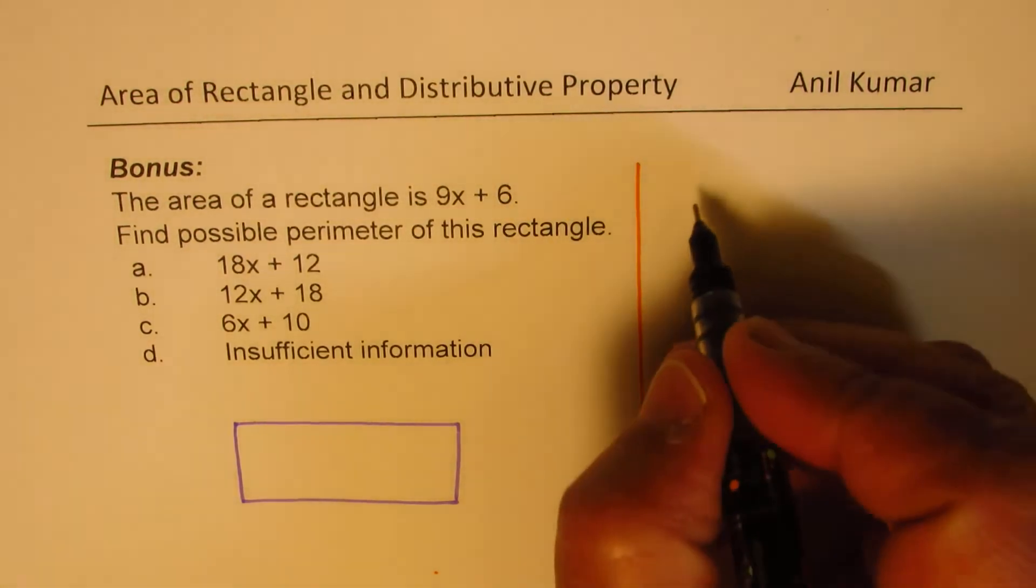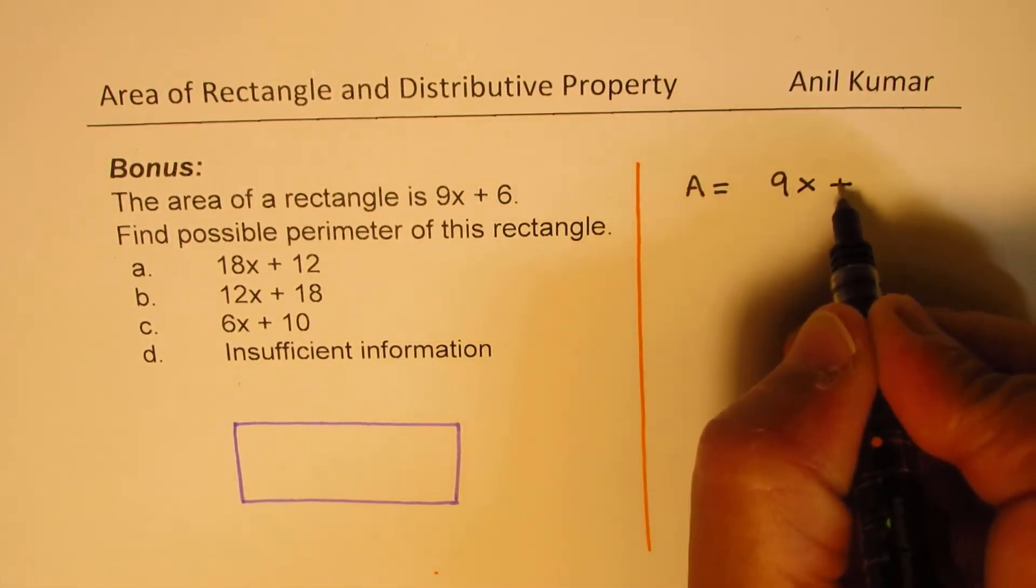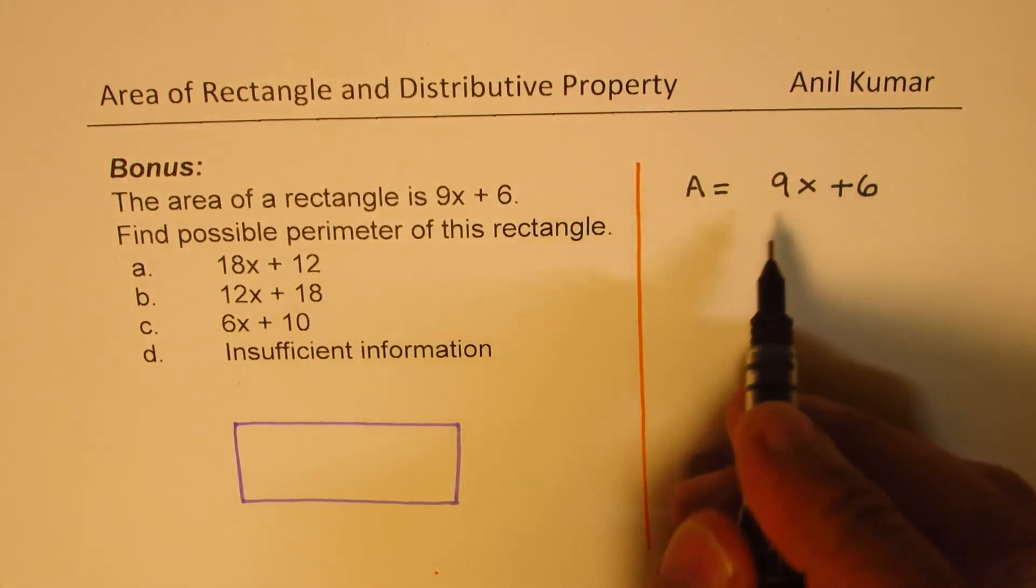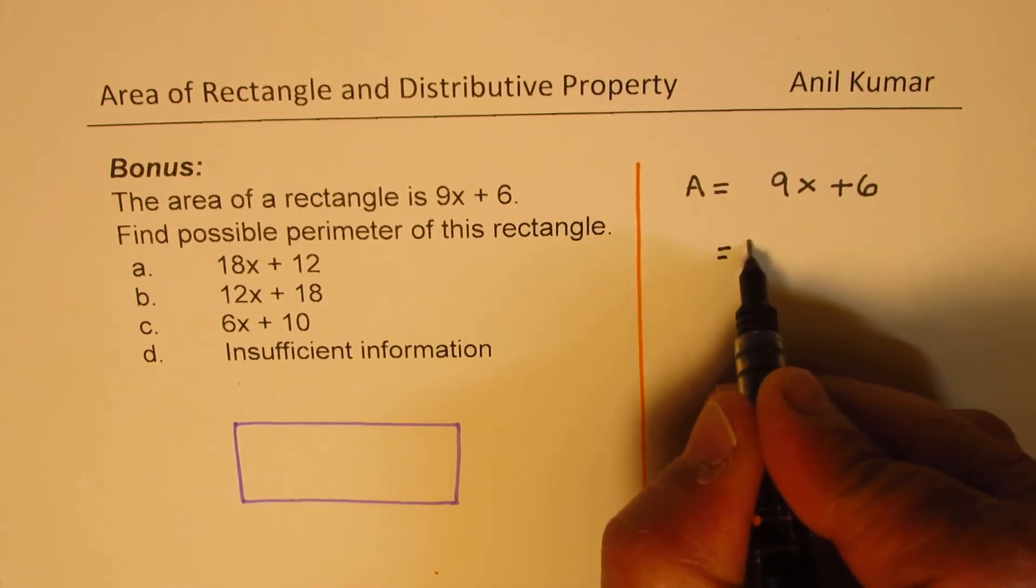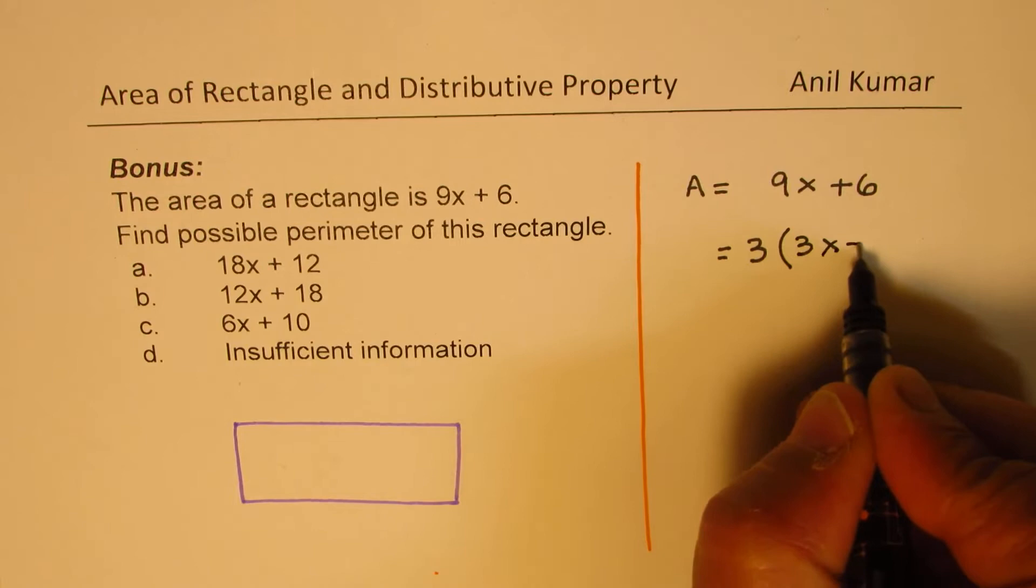We are given area equal to 9x + 6. Do you see any common factor between 9 and 6? Yes, 3 is a common factor. So we can write this as 3 times (3x + 2).